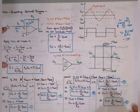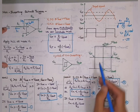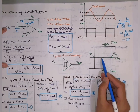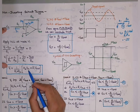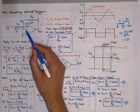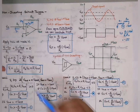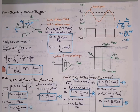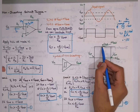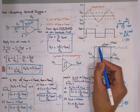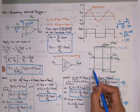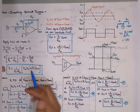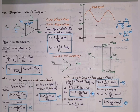Now decreasing Vin below zero makes the overall V1 value negative. For sufficiently negative Vin, the non-inverting terminal drops below the inverting terminal, shifting Vout to −Vsat. The output maintains +Vsat up to the lower threshold, at which point it switches to −Vsat and remains there as Vin continues to decrease.